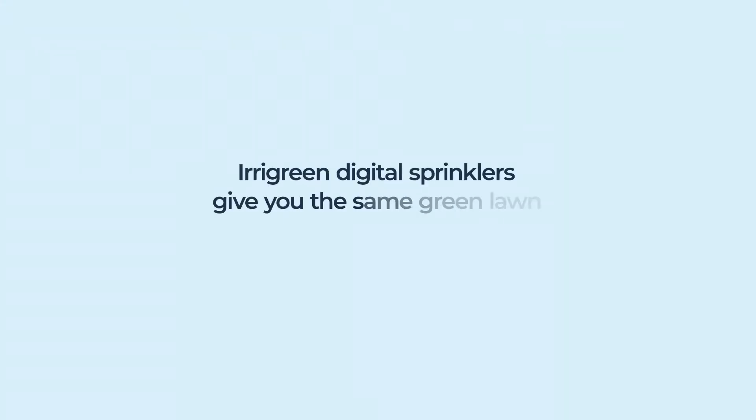Irigreen Digital Sprinklers give you the same green lawn, but use approximately half the water. How do they do it?